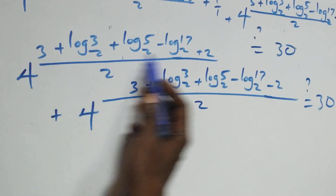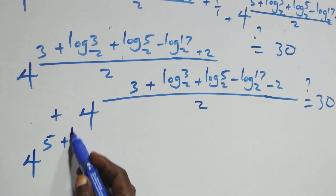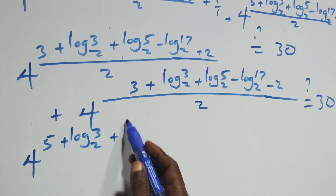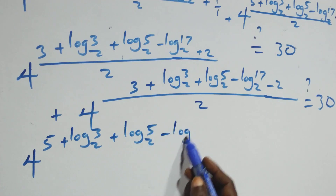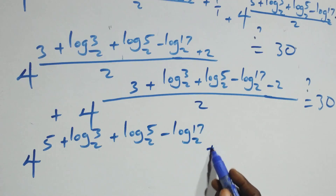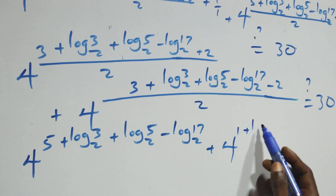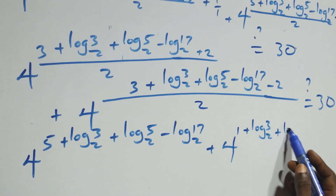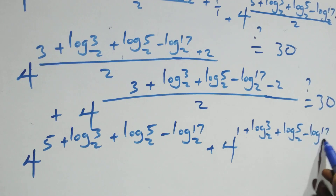Adding/subtracting: 3 + 2 = 5, so the first term is 4^((5 + log₂3 + log₂5 − log₂17)/2). And 3 − 2 = 1, so the second term is 4^((1 + log₂3 + log₂5 − log₂17)/2), equals 30.